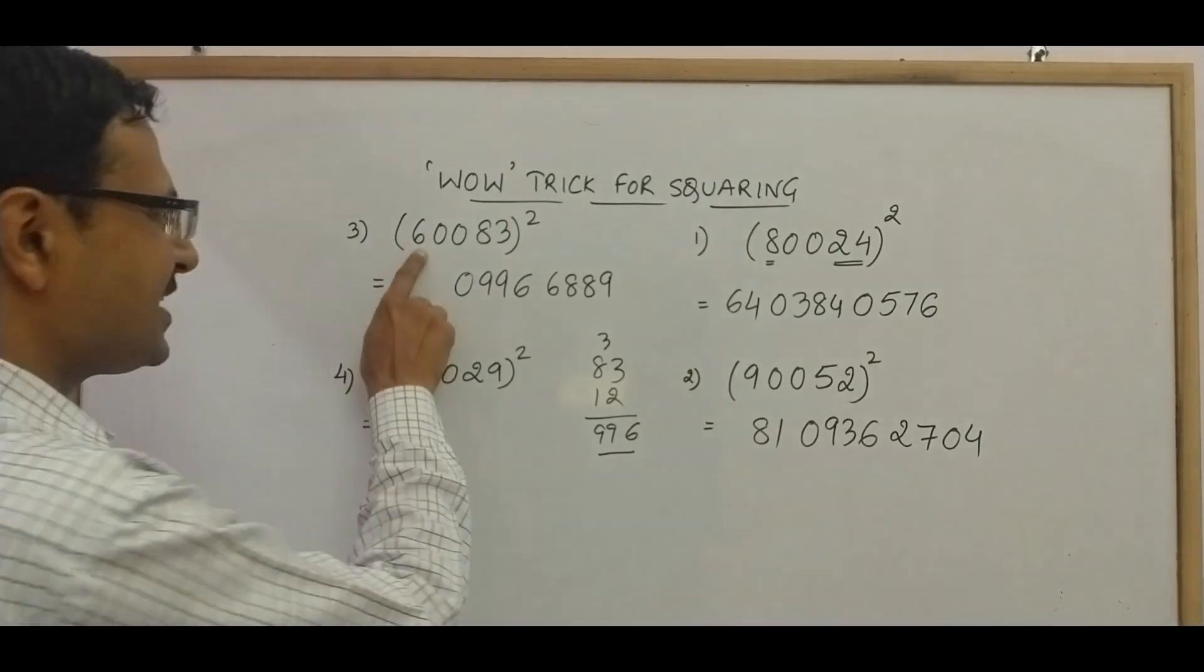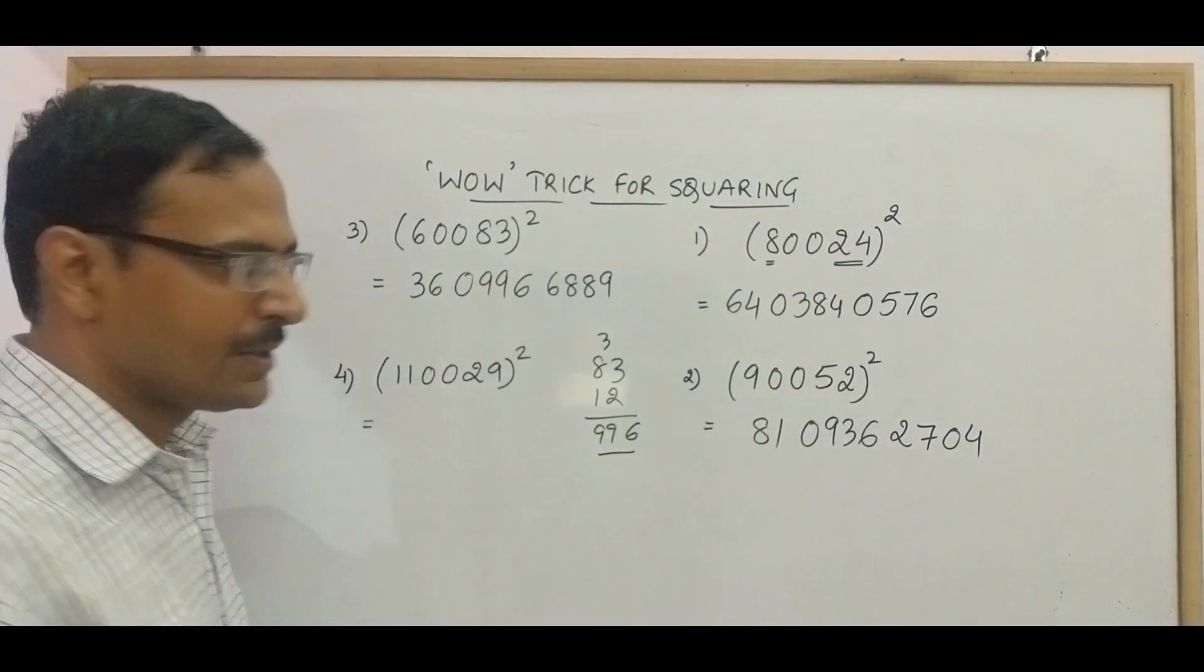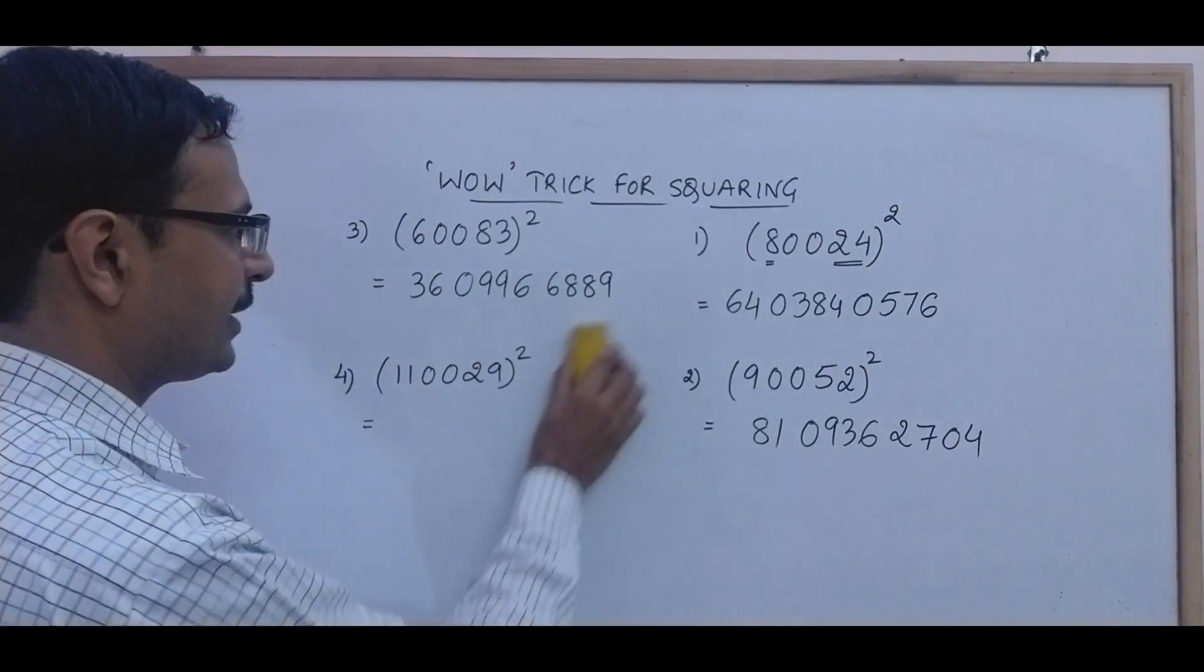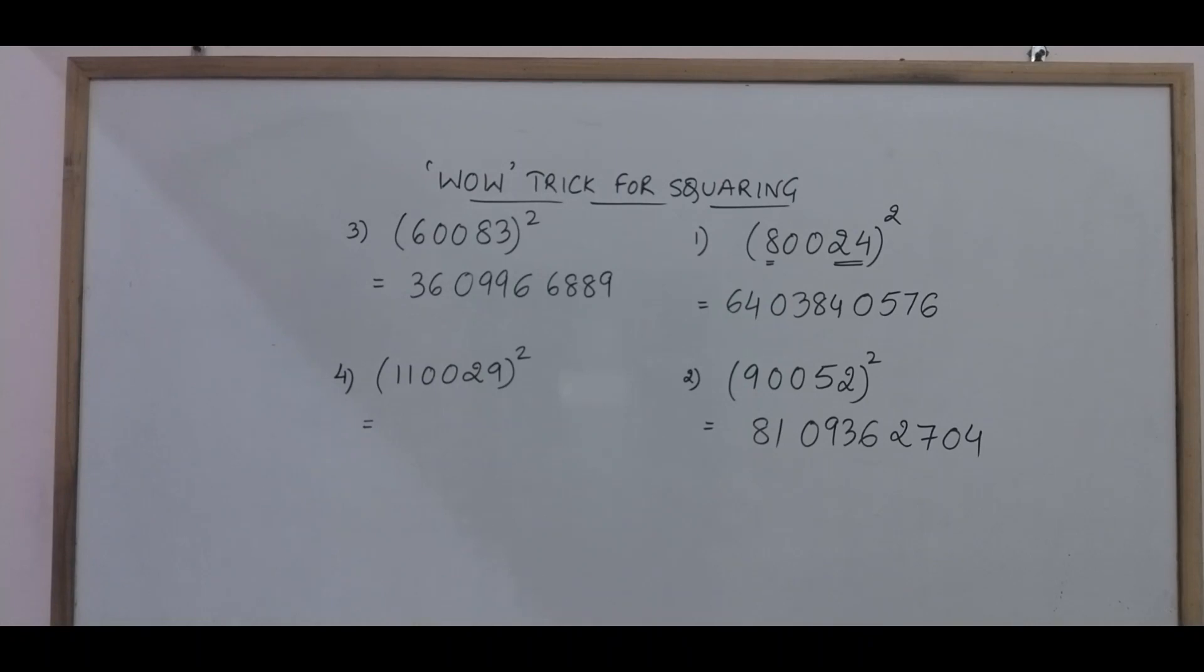And the final step, you know very well, right? This is 6, 6 square is 36, so the answer 60083 whole square is 360, 996, 6 8 8 9.